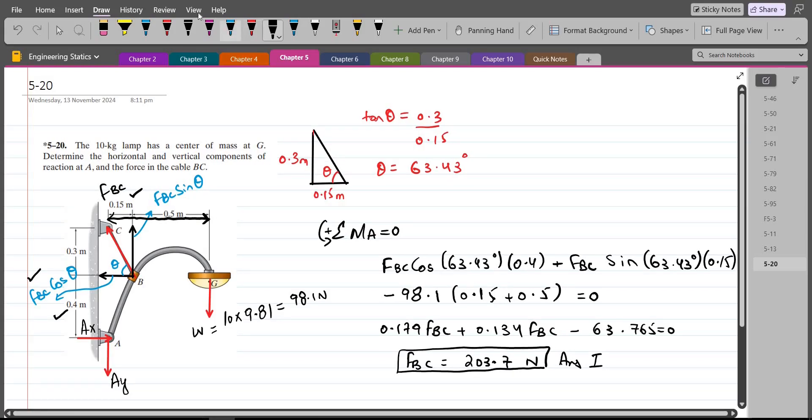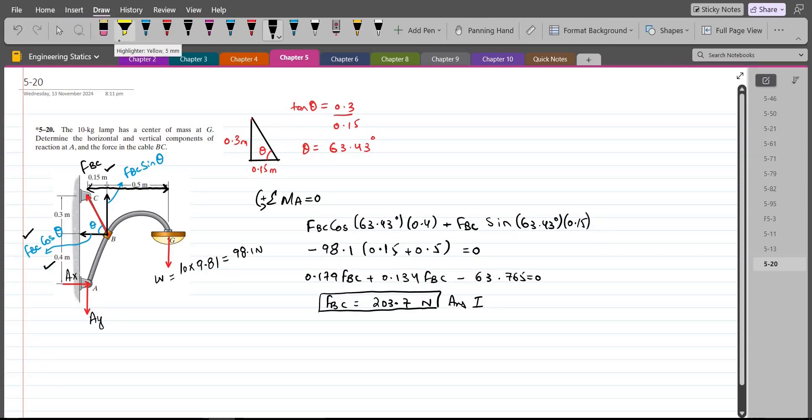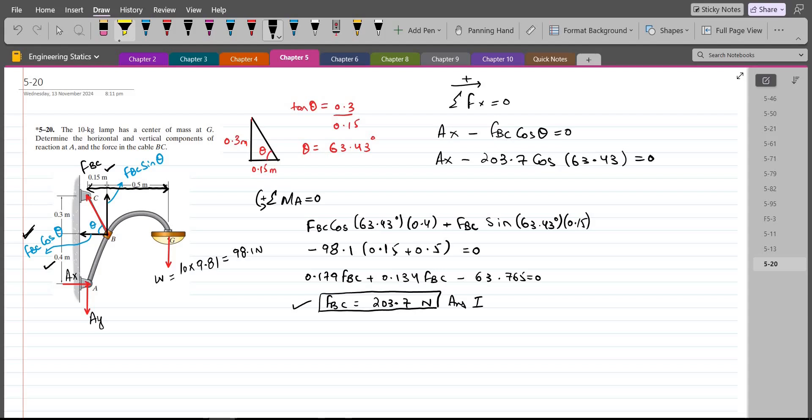And now for the AX and AY force we can do summation of forces in x direction equals to 0. I am considering the right hand side as positive. So we have AX minus the horizontal component of the FBC force which is FBC cos theta equals to 0. So AX minus FBC which is 203.7 Newton into cos 63.43 degrees equals to 0. So from here AX comes out to be 91.1 Newton.